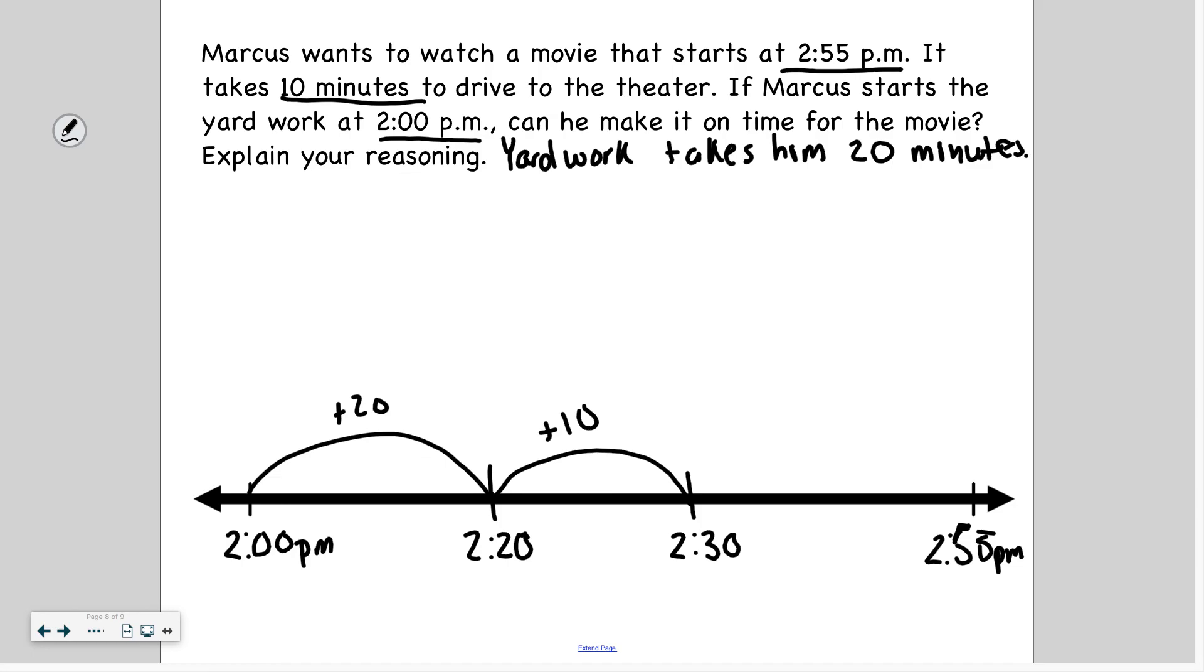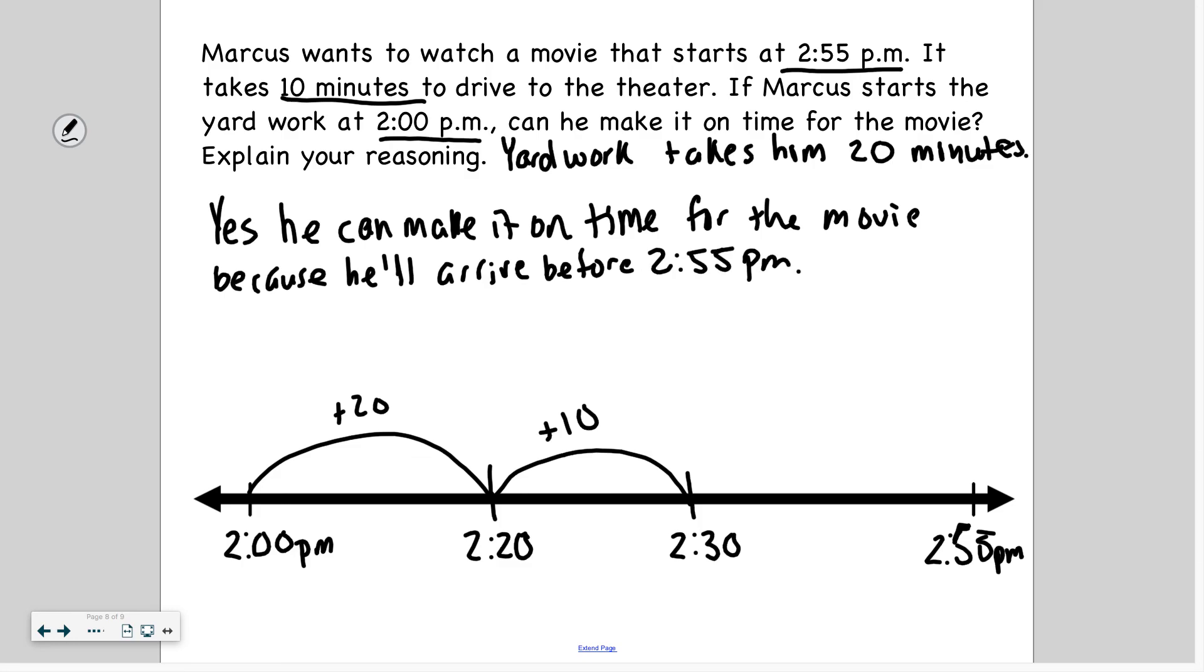So explain your reasoning. Let me write that down. Yes, he can make it on time for the movie because he'll arrive before 2:55 PM. So that's how I know he'll make it on time because he'll get there earlier. And obviously if you're early, you are definitely on time.